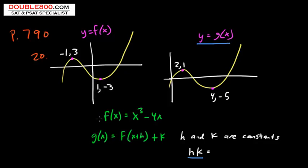This first function, the definition of f of x, x cubed minus 4x, is really superfluous. It is unnecessary. I'm just going to cross this out. You don't need this. What you really want to pay attention to is g of x, that's the graph on the right, equals f of x plus h plus k. We want to find the value of h and k and then the product.